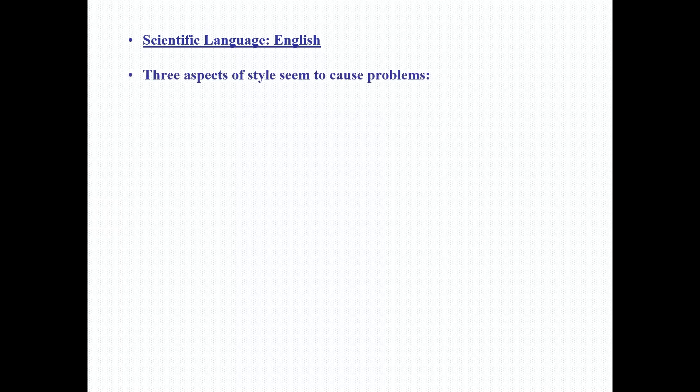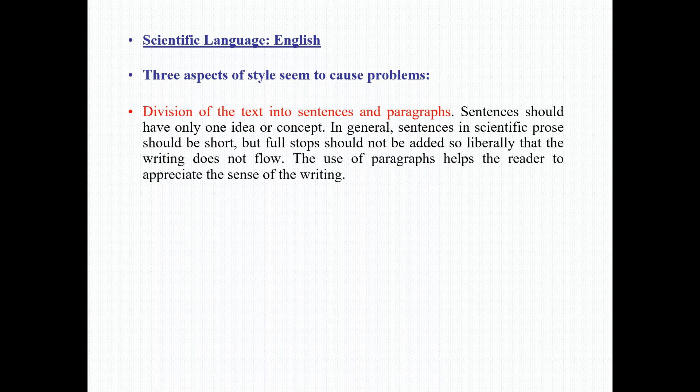Three aspects of style seem to cause problems when dealing with scientific English. First is division of the text into sentences and paragraphs. Scientists should have only one idea or concept in general sentences. Scientific prose should be short, but full stops should not be added so liberally that the writing does not flow. The use of paragraphs helps the reader appreciate the sense of the writing.